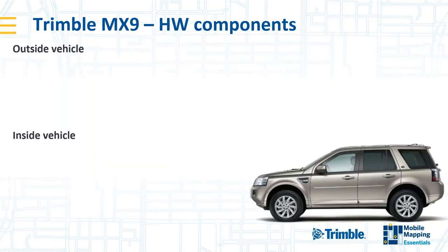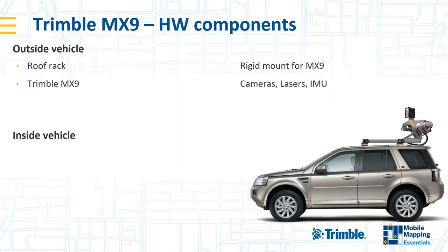A little bit about the hardware before we dive into the software. The MX9 consists of a roof rack that goes on the vehicle and is rigidly mounted. The MX9 sensor head includes a 360-degree camera, two oblique cameras looking sideways, laser scanners, and an IMU and GNSS system for navigation. We can add a secondary antenna called GAMS which helps with heading determination — not compulsory but often advised.